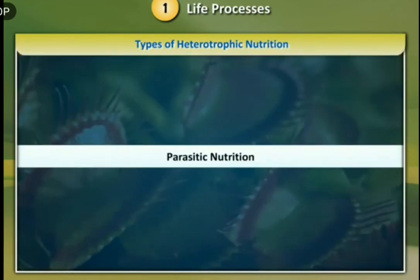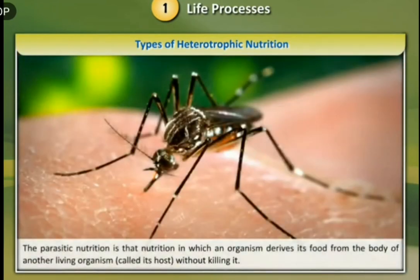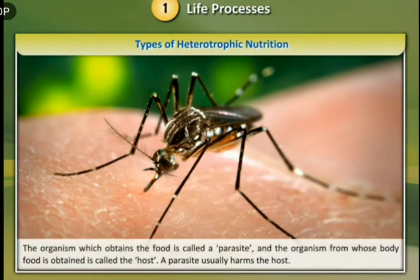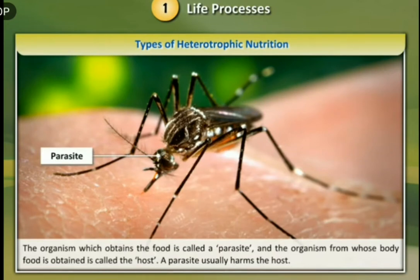Parasitic nutrition is that nutrition in which an organism derives its food from the body of another living organism called its host, without killing it. The organism which obtains the food is called a parasite, and the organism from whose body food is obtained is called the host.